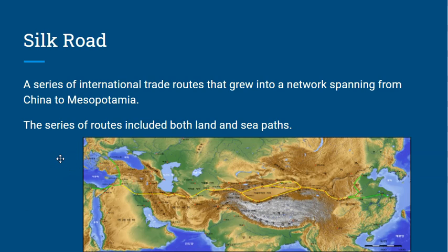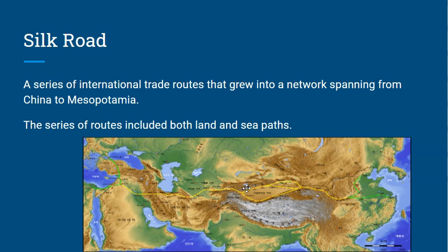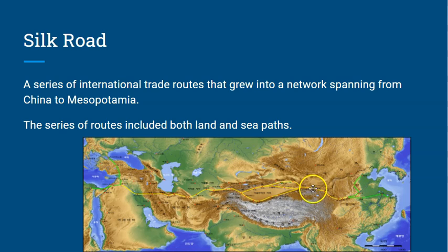Here's a vocab word we've seen before: the Silk Road. The Silk Road is a series of international trade routes that grew into a network spanning from China all the way to Mesopotamia. The routes included both land and sea paths, allowing different cultures to expand, trade, and exchange new ideas throughout Asia and Europe.